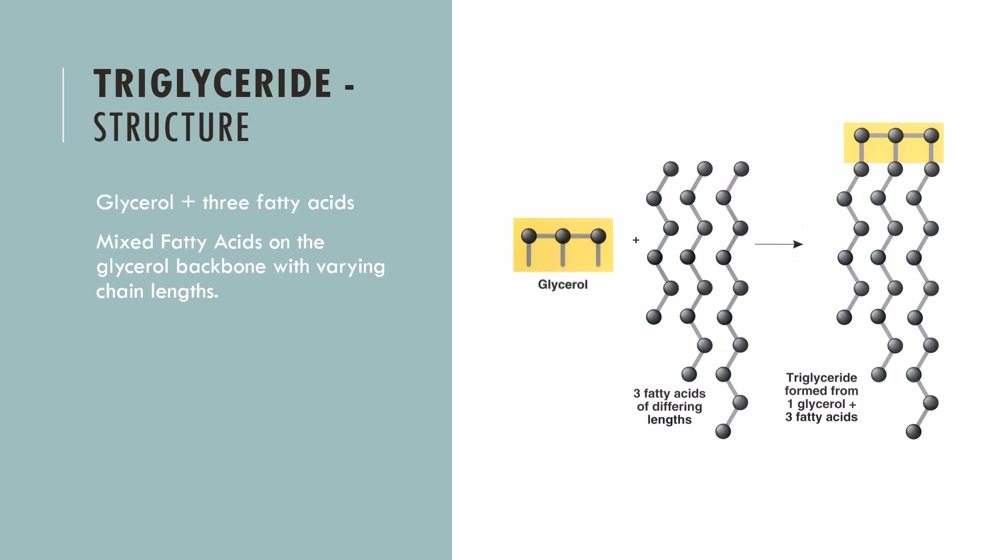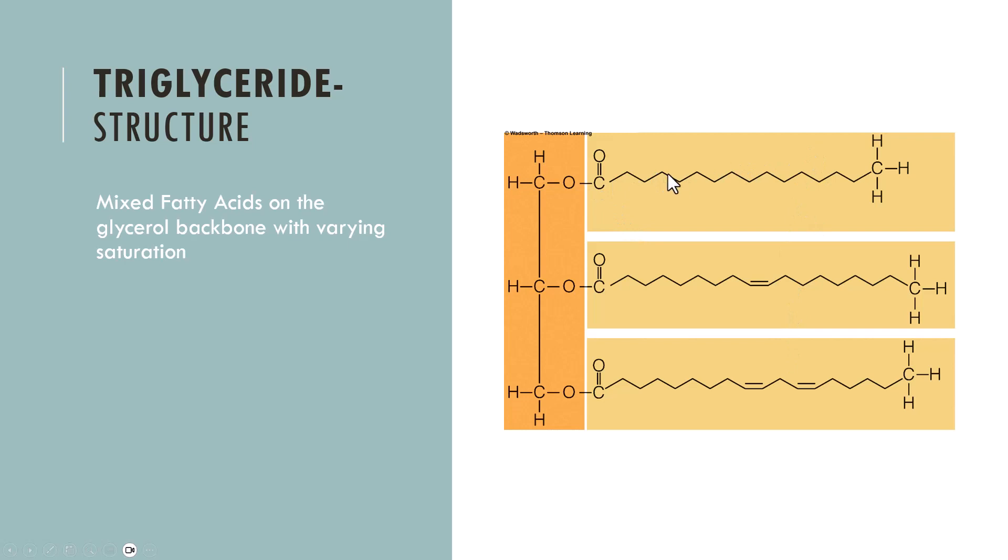So we said that the triglycerides are made up of this glycerol backbone and three fatty acids. And the triglyceride is mixed, meaning it can have different chain lengths and different levels of saturation. So in this picture we see different chain lengths, and here we see different levels of saturation. So in this one we see a saturated fat, and this is a monounsaturated fat, and this is a polyunsaturated fat. So a triglyceride will not have all saturated or all unsaturated. It has a variety of both saturation and chain length. And that should make sense because 95% of the fat we eat is made up of triglyceride, and we know that foods are not all saturated or all unsaturated.